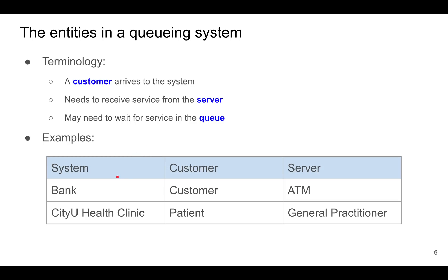The queuing model can be used to analyze many different real-life situations. For example, if the system is a bank, then customers might be queuing to use the ATM. Or if the system is a city health clinic, patients might be waiting to see their general practitioner.